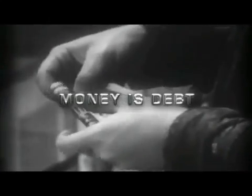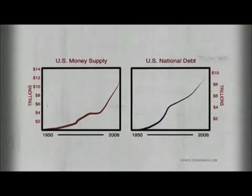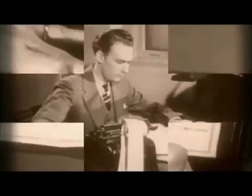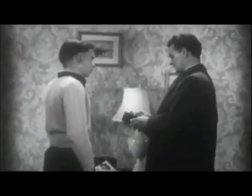Now, if this reality of inherent and perpetual inflation seems absurd and economically self-defeating, hold that thought, for absurdity is an understatement in regard to how our financial system really operates. In our financial system, money is debt and debt is money. Here is a chart of the US money supply from 1950 to 2006. Here is a chart of the US national debt for the same period. How interesting it is that the trends are virtually the same — the more money there is, the more debt there is; the more debt there is, the more money there is. Every single dollar in your wallet is owed to somebody by somebody.